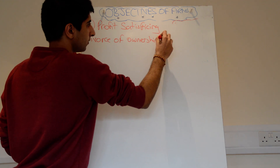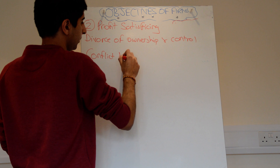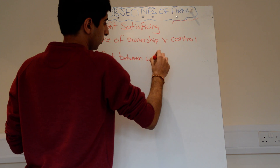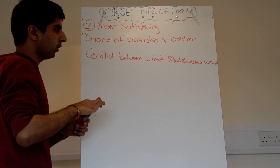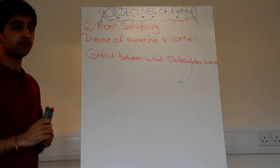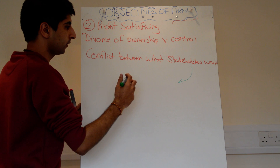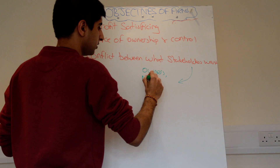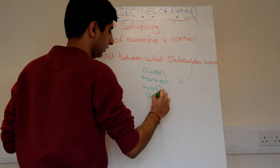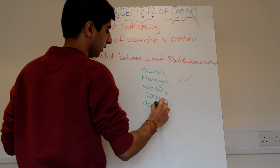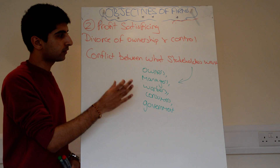Profit satisficing occurs because there is a divorce of ownership and control, and as a result, there's a conflict between what the stakeholders want. Stakeholders are groups of people who have some sort of link to the company — groups of people who are influenced in some way by what the company does. That could be owners, managers, workers, consumers, government, and so on.